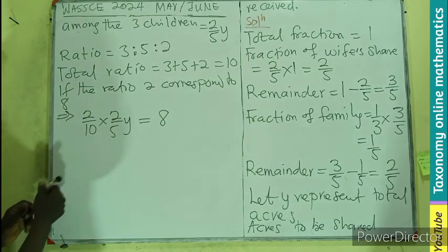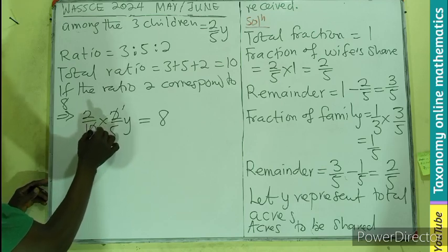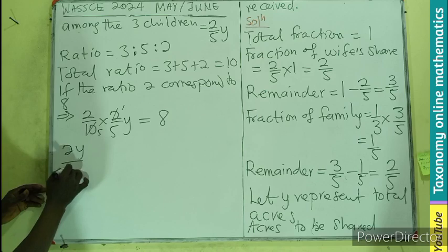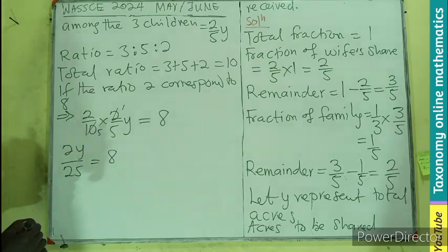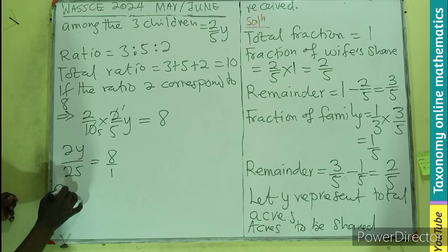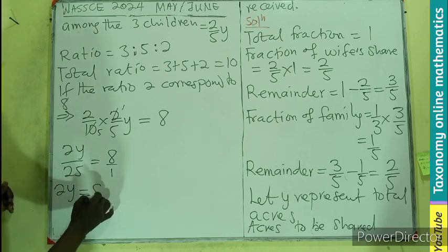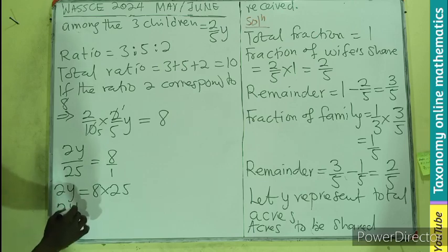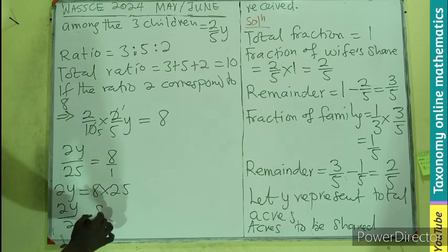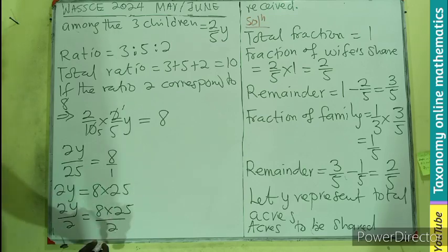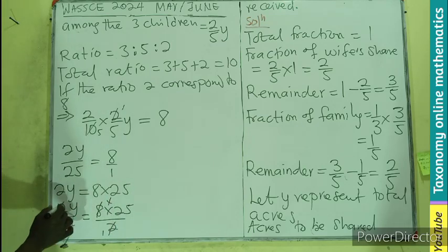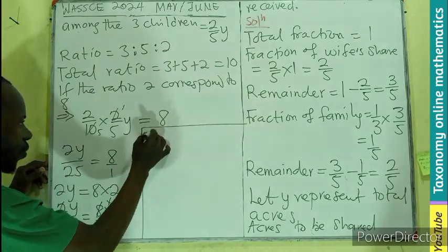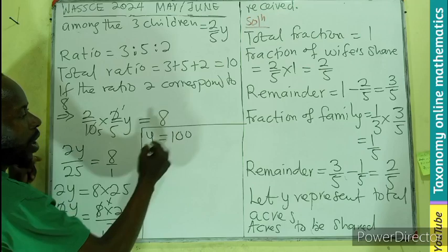So we can do our cancellation. This will go here one. This will go here five. So two Y divided by five times five, twenty-five equals to eight. Can we cross multiply? Two Y would be equal to eight times twenty-five. So from here, I will only divide by two. Two will go here one. Go here four. Two will go here and cancel. So in this case, Y would be equal to what? One hundred.